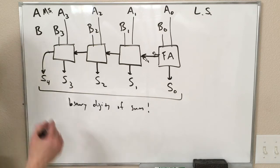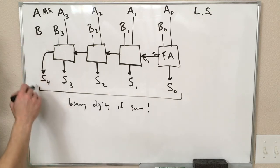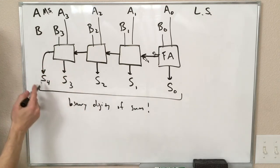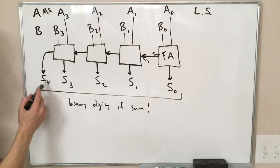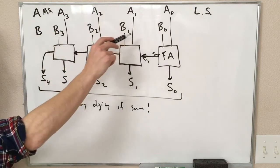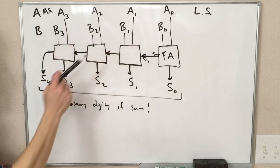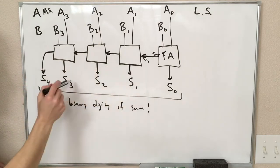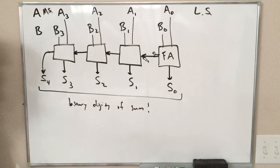So what that means, then, is this bit that gets carried out, we could use as an extra digit, right, since this is, this would be the 16's place. So adding together 1, 0, 0, 0 and 1, 0, 0, 0, is going to carry a 1 out here, and everything else is going to be 0. So that gives us 1, 0, 0, 0, 0, which is 16.